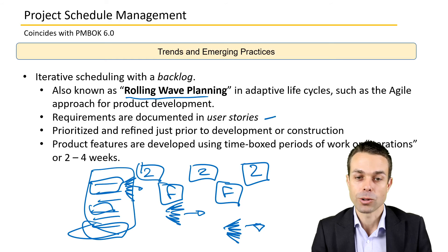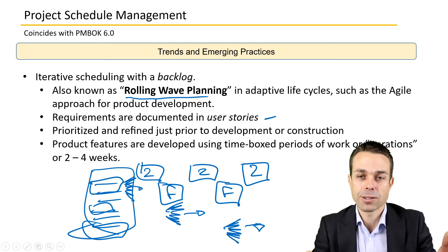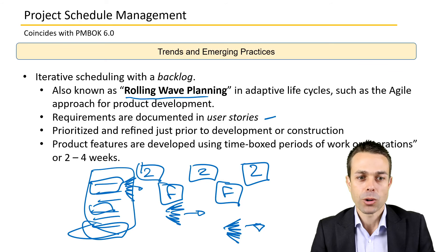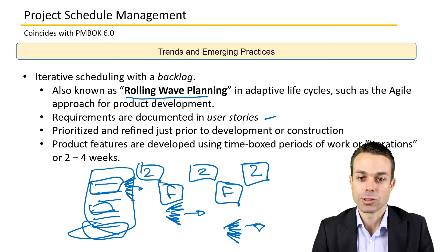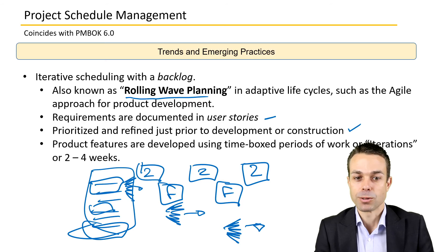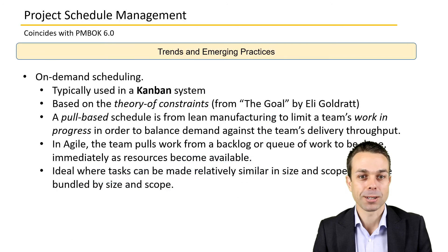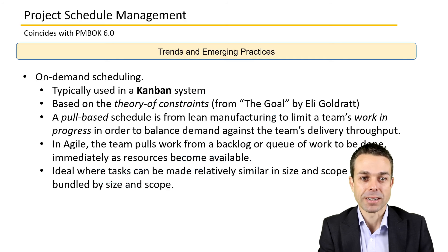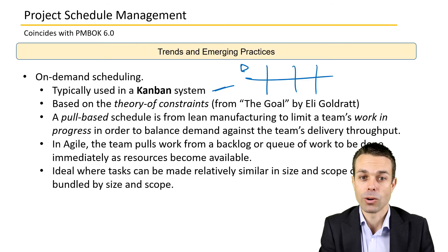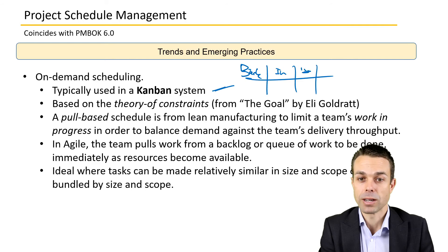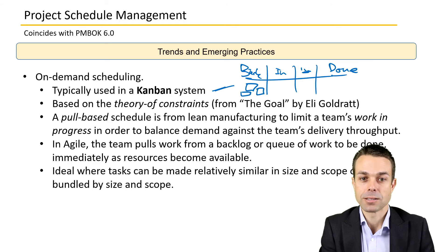Requirements are documented in user stories — how the user is actually using the product. This can be expressed as given/when/then or other formats for elaborating on user stories. They are prioritized and refined just before development or construction, and product features are developed using time-boxed periods — our iterations. You might also see on-demand scheduling, such as a Kanban system, where we have a Kanban board with a backlog on the left, in-progress columns in the middle, and done on the right.